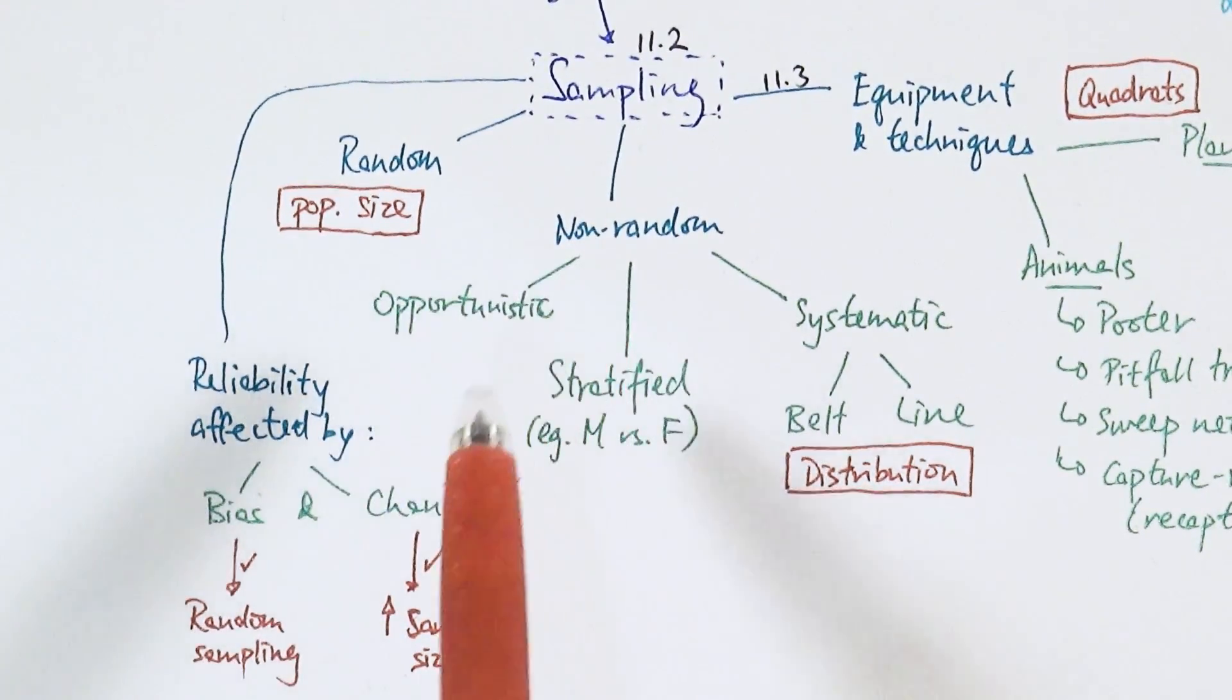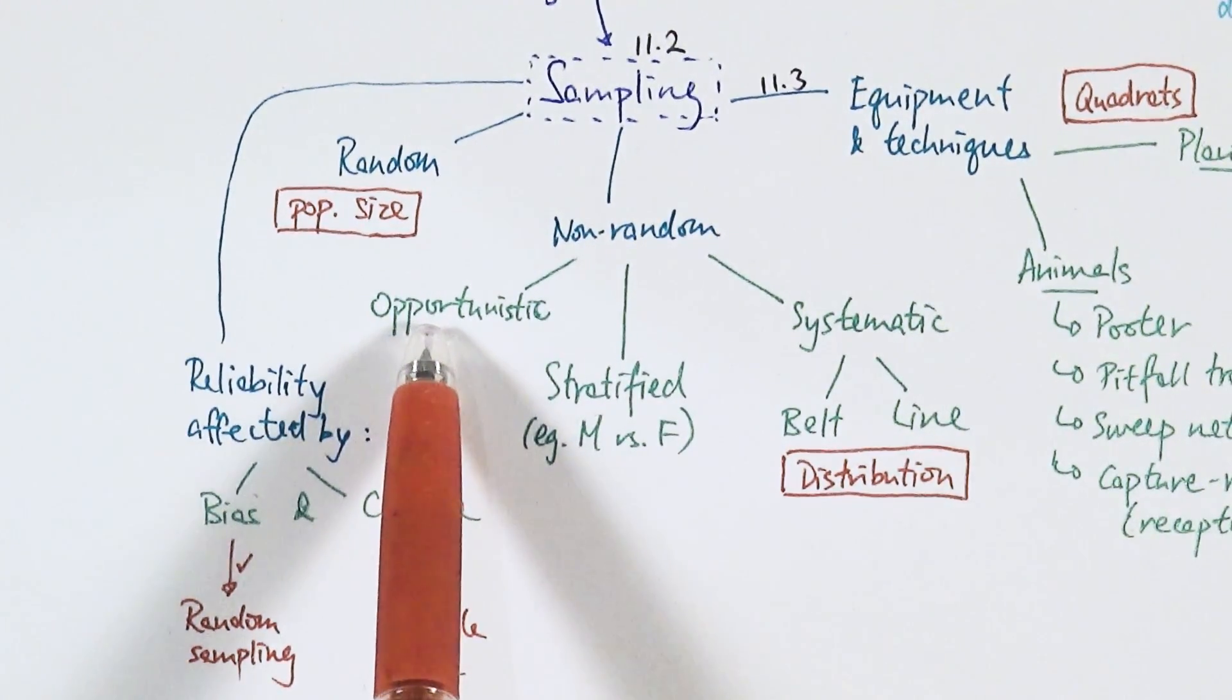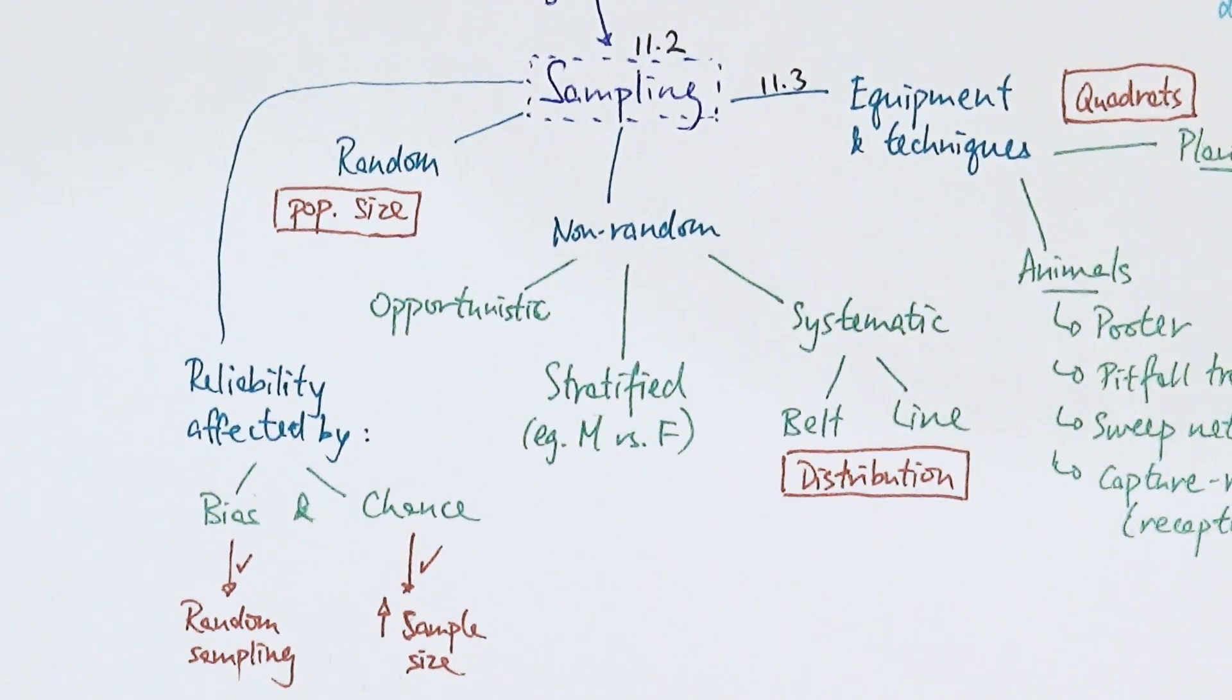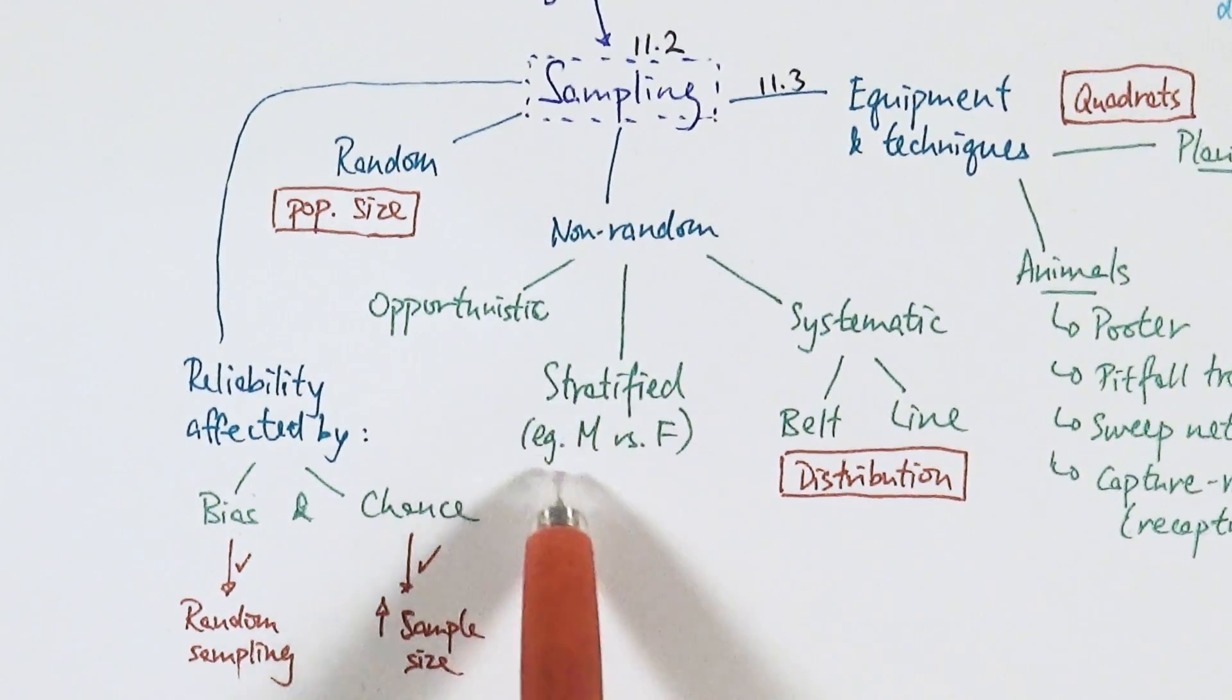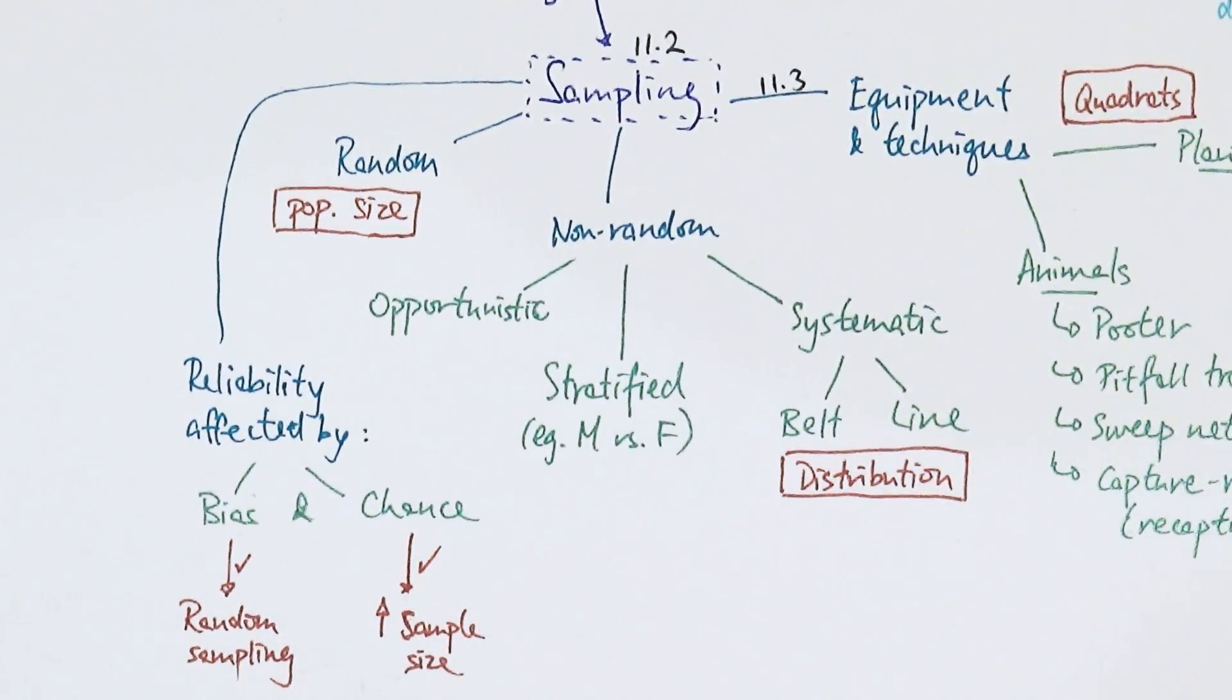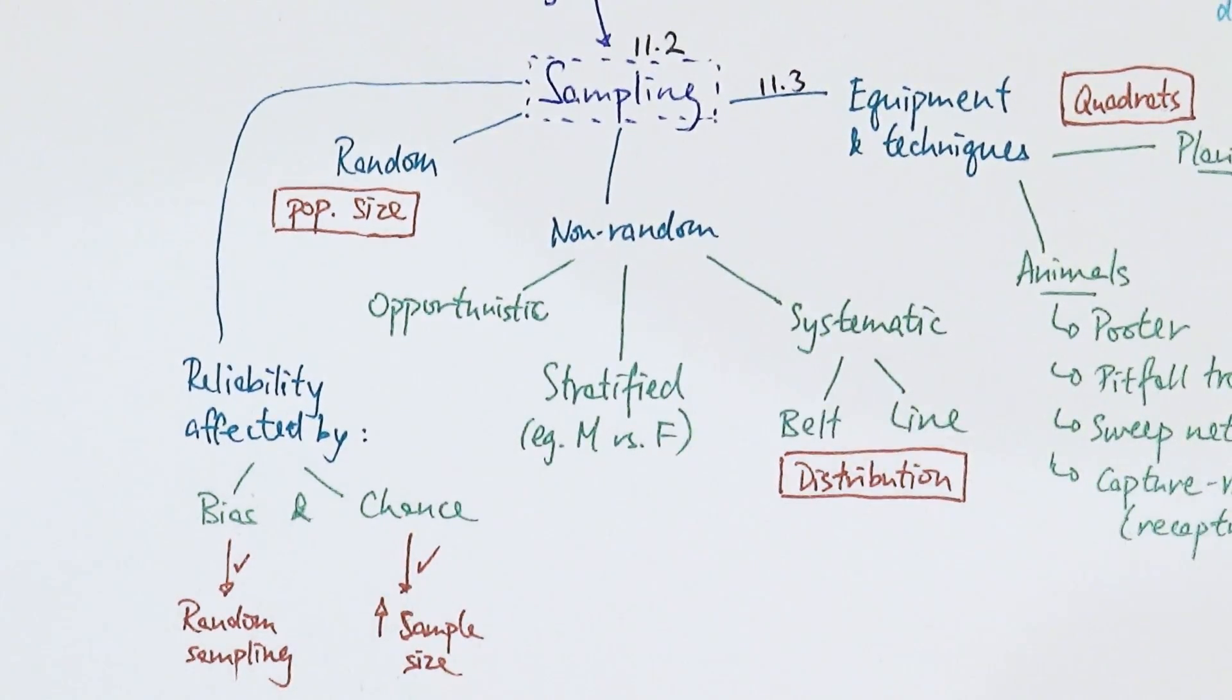Non-random sampling has three types. Opportunistic means simply picking whatever species you can easily calculate in an area. It's the weakest form because you're choosing what to measure—in a classroom, you'd probably pick humans rather than plants or bacteria, since humans are easier to count. Stratified sampling refers to sampling by different groups or strata, like sampling within male and female populations and comparing them.